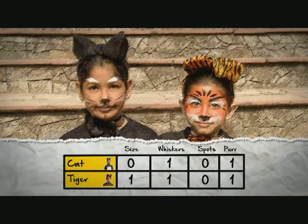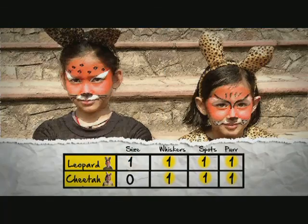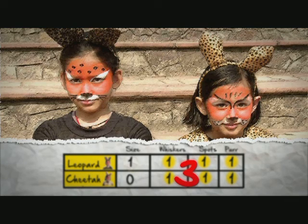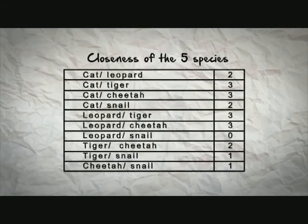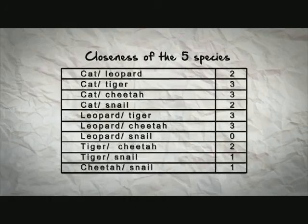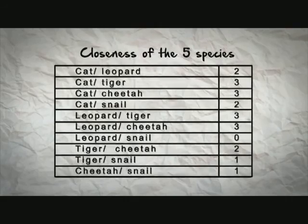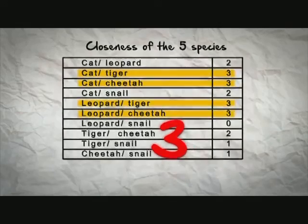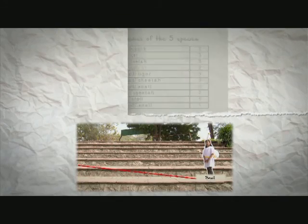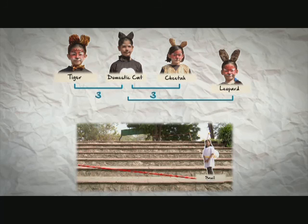When we compare on whiskers, purring, and size, we work out the distance between any two species. For example, cat and tiger agree on whiskers, spots, and purr, but not on size — so the distance between them is three. Similarly, cat and cheetah, leopard and tiger, and leopard and cheetah all have a distance of three. We tabulate all possible closeness values.